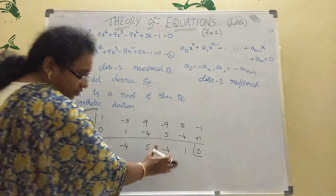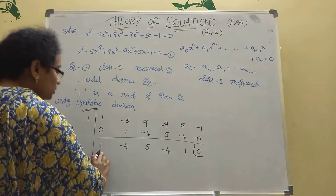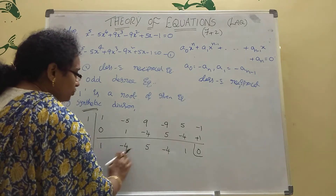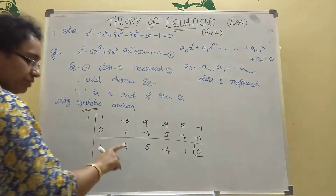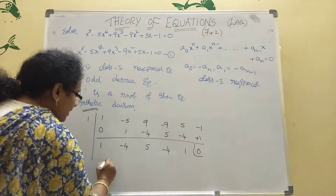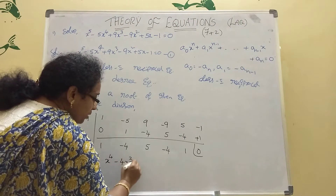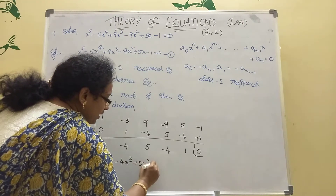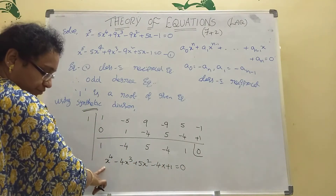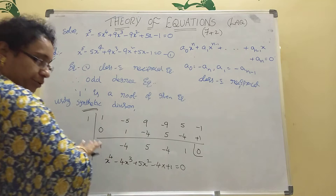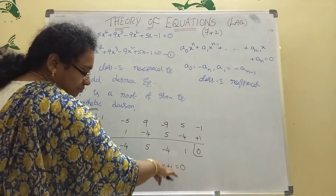These are the new coefficients. Now write in terms of x. There are 5 terms, so write from power 4. The reducing equation is: x^4 - 4x^3 + 5x^2 - 4x + 1 = 0.